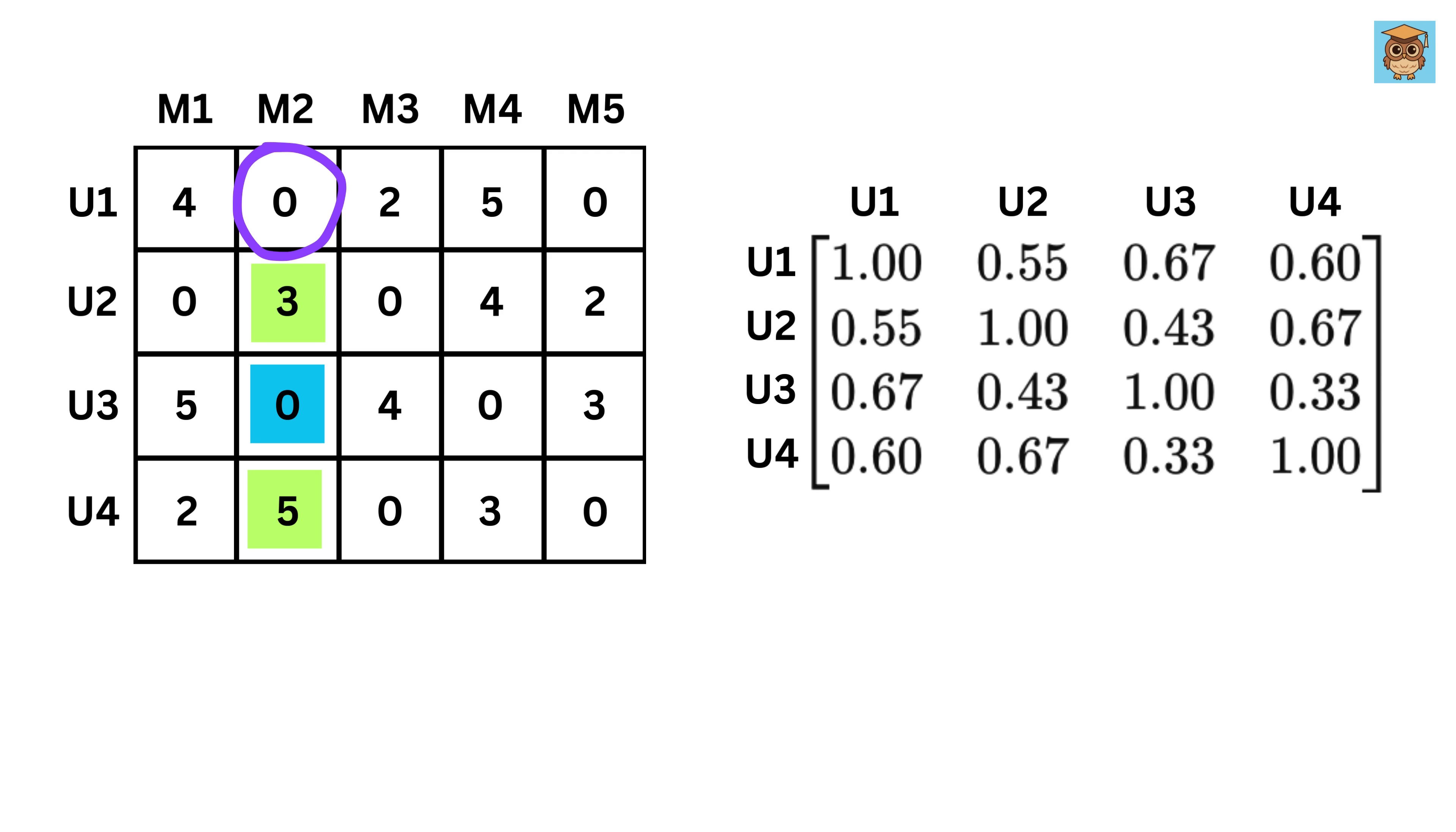We take their ratings, multiply by their similarity to user one and add them. For user two, we get 0.55 times 3, which is 1.65. For user four, we get 0.6 times 5 is 3. Add 1.65 plus 3 equals 4.65.